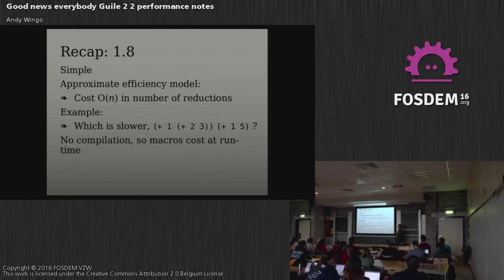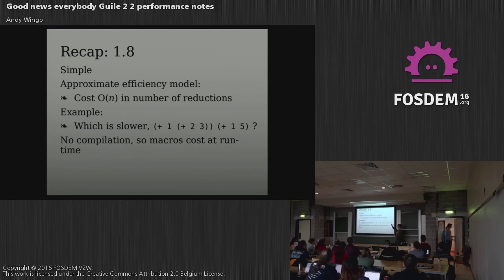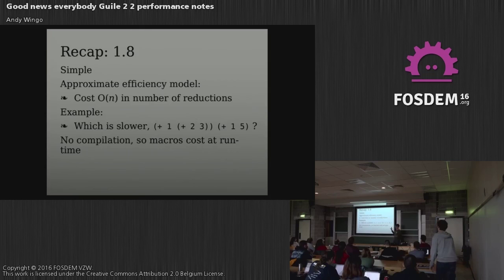If we look back at Guile 1.8 in the bad old days, the approximate efficiency model would be: the cost of your program is O(N) in the number of reductions. You just basically count the number of open parentheses to see what the cost is. So you could say plus 1.5, even though these are the same program, is cheaper than plus 1, plus 2.3, because the one on the left has more reductions and the one on the right has fewer.